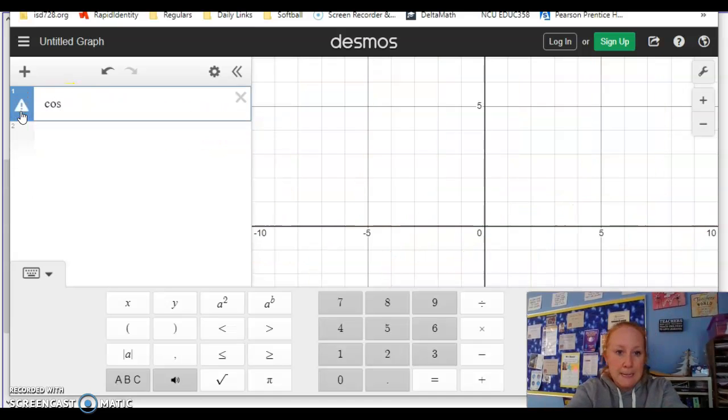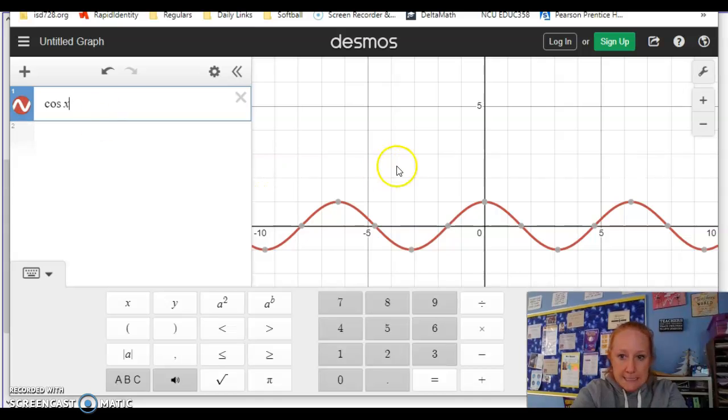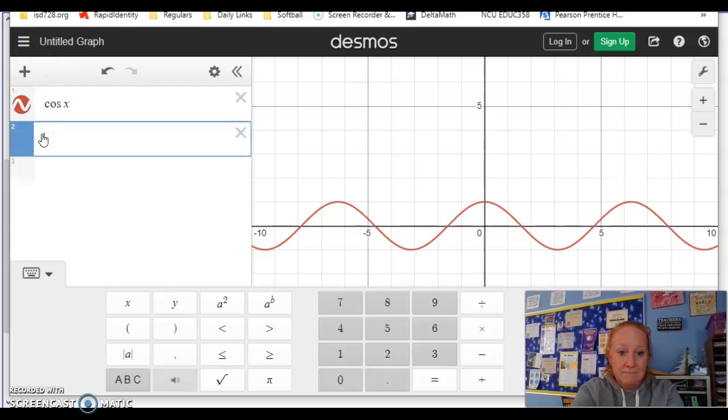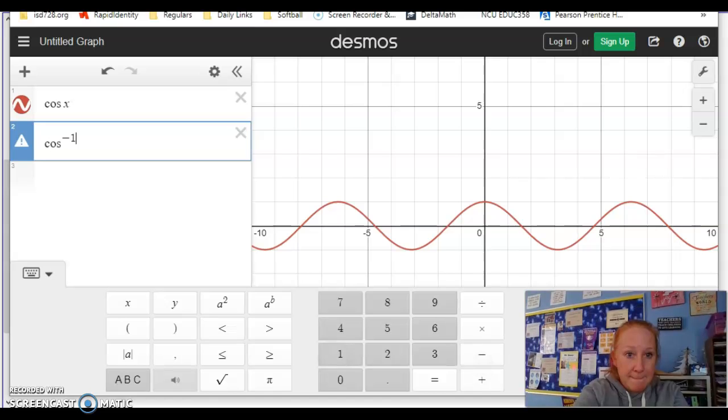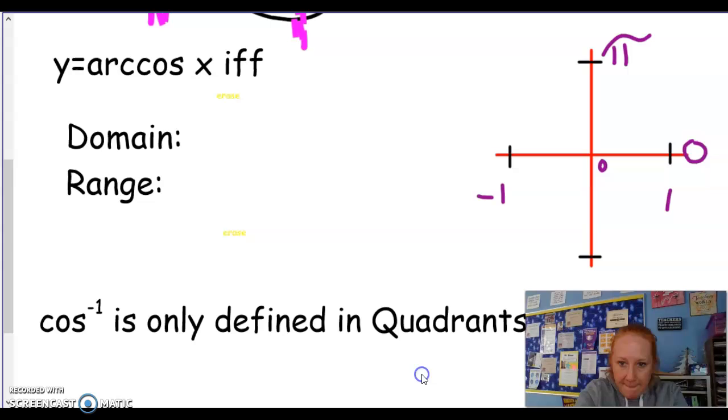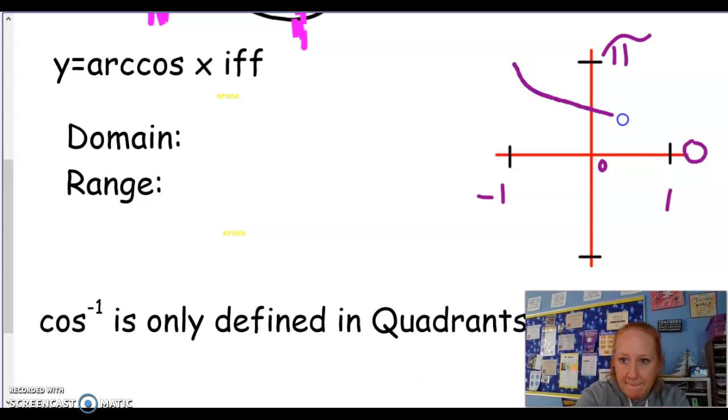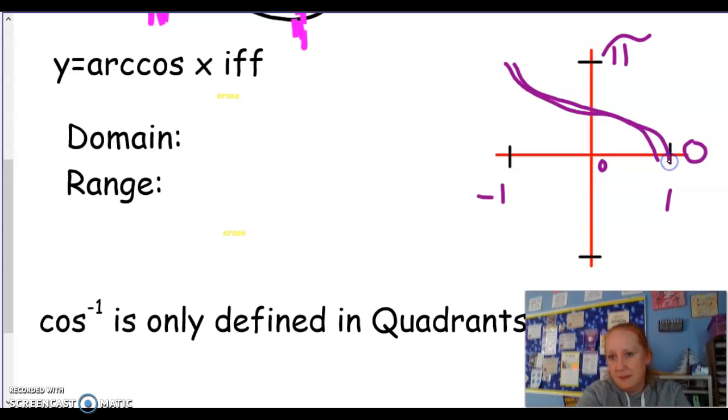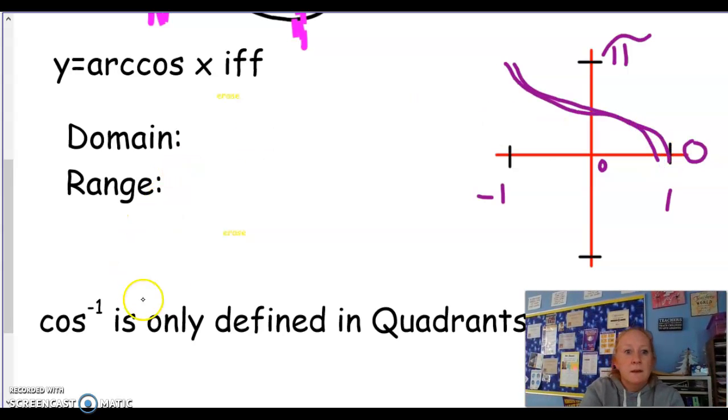Okay, so cosine x and cosine inverse of x. Like that, that's a little rough there, like that.